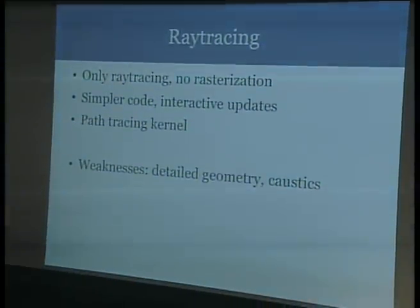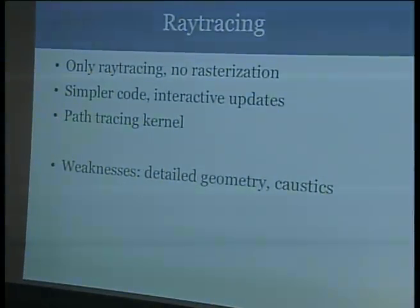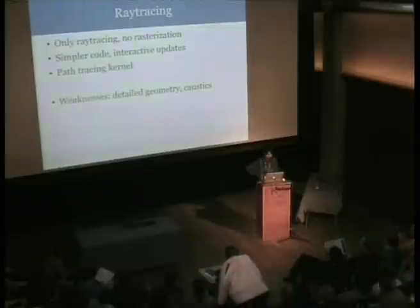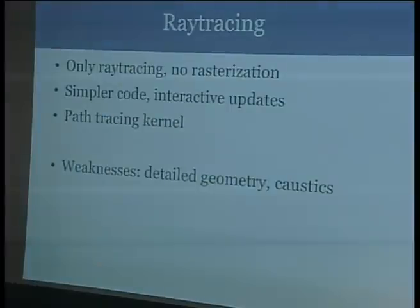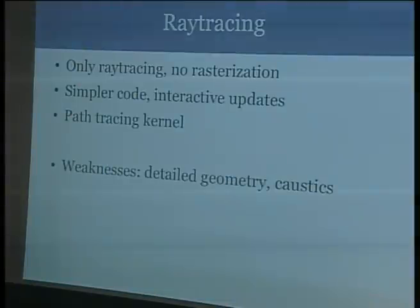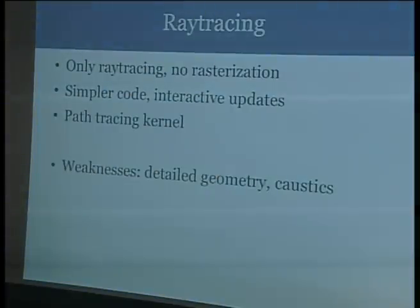The render engine uses only ray tracing — there's no rasterization, it's just simple path tracing, no photon mapping or anything like that. This is partially because it's easier, but also because I think we should try to keep things as simple as possible. The more rendering algorithms you add, the more complicated things become in terms of artifacts that you have to think about and quality parameters you have to tweak. Path tracing is also really suitable for interactive rendering.